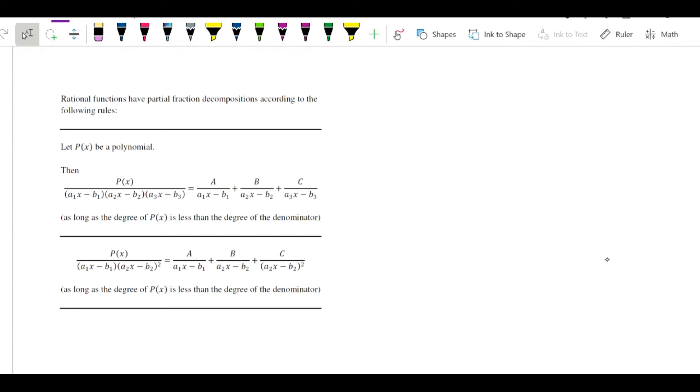If we assume that p of x is some polynomial, and recall that a polynomial is something like ax to the fifth plus bx to the fourth plus cx cubed plus dot dot dot all the way down to f. A polynomial looks like that, it's just integer powers of x multiplied by some coefficient and added together.